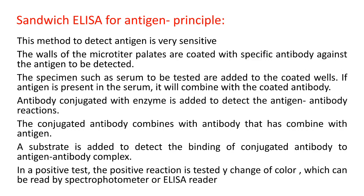Sandwich ELISA for antigen detection is very sensitive. The walls of the microtiter plates are coated with a specific antibody against the antigen to be detected. The specimen such as serum is added to the coated wells; if the specific antigen is present in the serum it combines with the coated antibody. The specificity of ELISA is important here — even though serum contains different antigens, only the specific antigen binds with the specific antibody, making this a specific and sensitive technique.